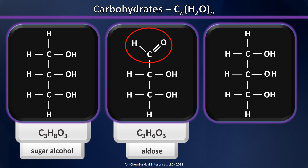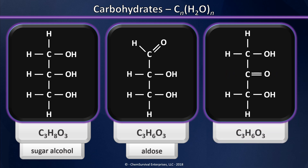Now let's take a look at that molecule on the right. To turn my sugar alcohol into a carbohydrate, I could just as well have chosen to remove these two hydrogens. When removed, they create a carbonyl group, but now it's in the middle of the molecule — a molecule with the formula C3H6O3, just as a carbohydrate should have. But this group is now a ketone. So we call this class of carbohydrates, where the carbonyl is internal, ketoses.